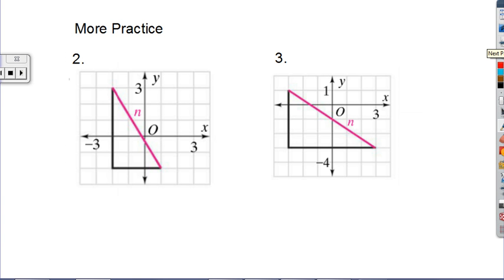Here's two more practice problems. We want to find n. We're looking for the hypotenuse. I'll give you a hint. When looking for the length of the sides, simply add these spaces or the squares. 1, 2, 3. This would be 3. Use the Pythagorean theorem for 2 and 3 to find what n equals and submit those to your teacher.